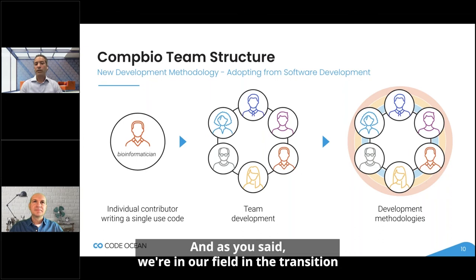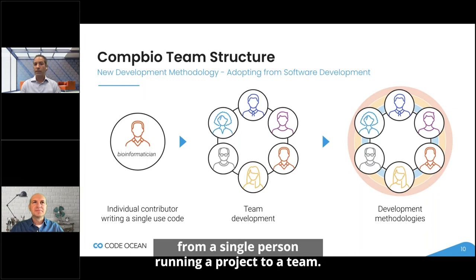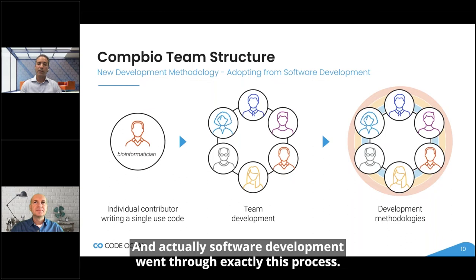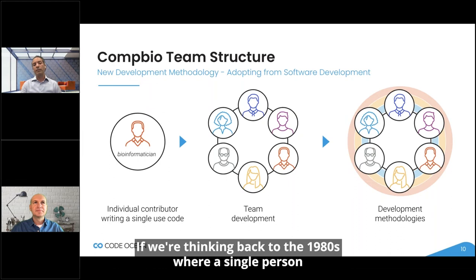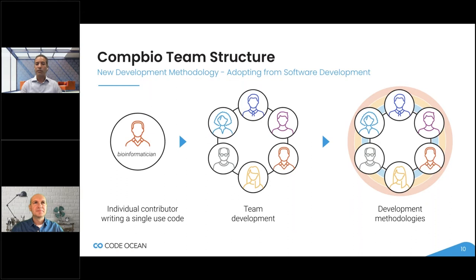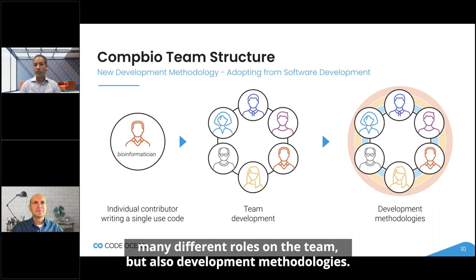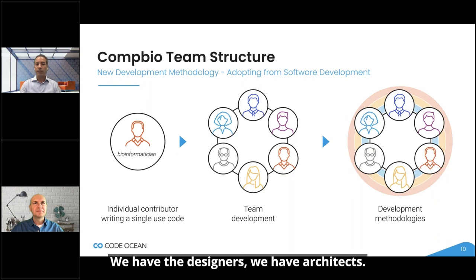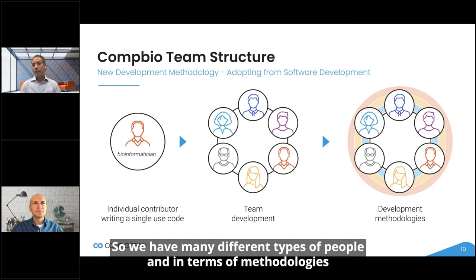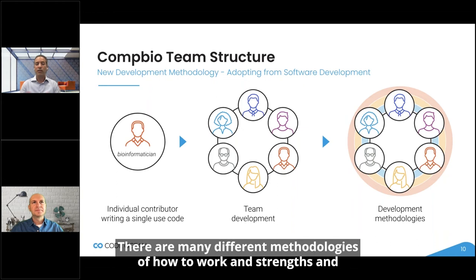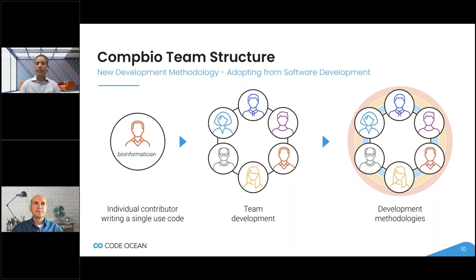We're in our field in the transition from a single person running a project to a team. Software development went through exactly this process. Thinking back to the 1980s, a single person was able to write an operating system, but today it's inconceivable that one person would write an operating system. That field generated not only many different roles on a team — front-end, back-end, designers, architects — but also development methodologies like Agile, Spotify's squads, sprints, and all these methodologies that were invented. And that field became very successful.